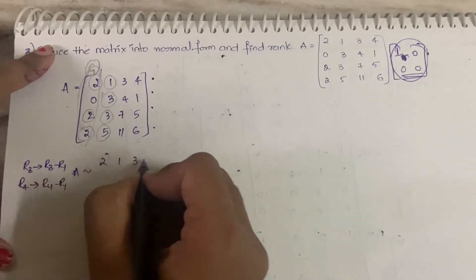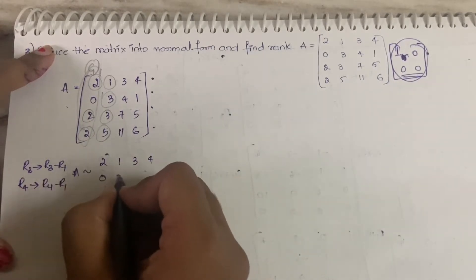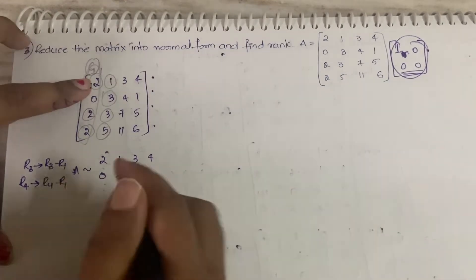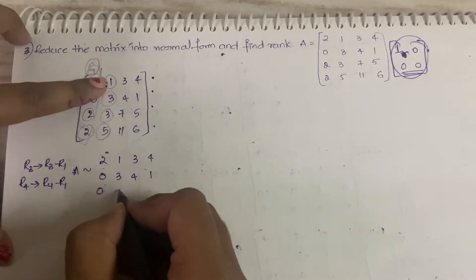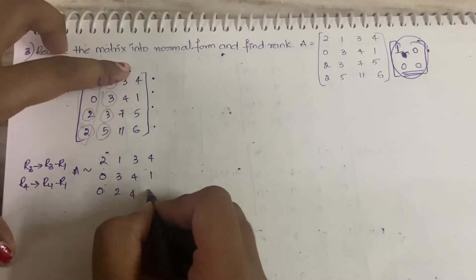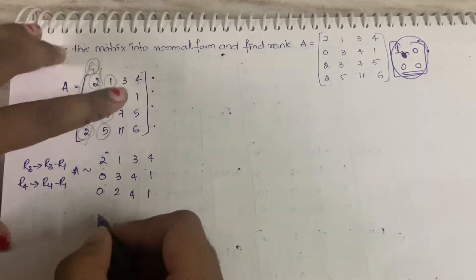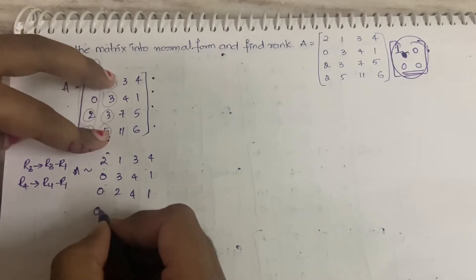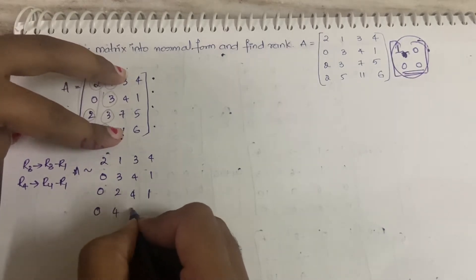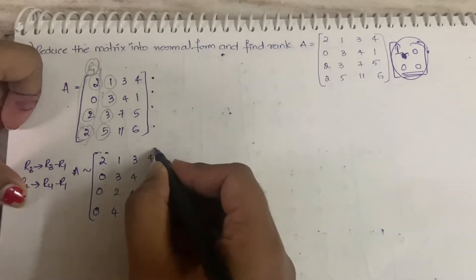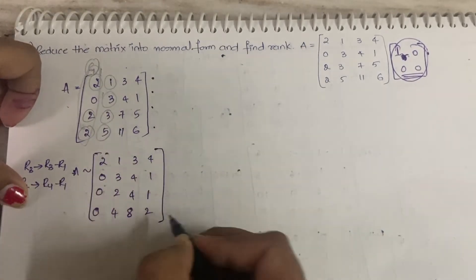So A becomes: row 1: 2, 1, 3, 4; row 2: 0, 3, 4, 1; row 3: 2−2=0, 3−1=2, 7−3=4, 5−4=1; row 4: 2−2=0, 5−1=4, 11−3=8, 6−4=2.